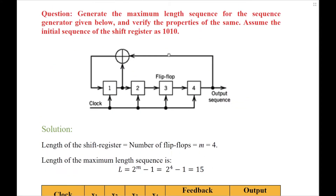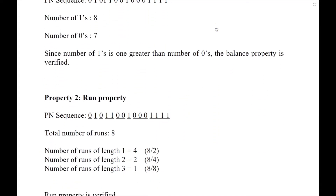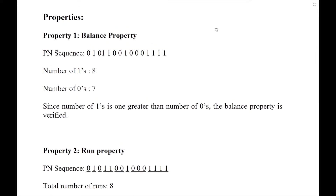Coming back to the question, we are also asked to verify the properties of the maximum length sequence generated. The maximum length sequence has three interesting properties. The first one is called the balance property. The balance property says the number of ones in the sequence generated is 1 greater than the number of zeros. If you count the number of ones in this sequence, it is equal to 8, and the number of zeros is equal to 7. Since the number of ones is 1 greater than the number of zeros, the balance property is verified.